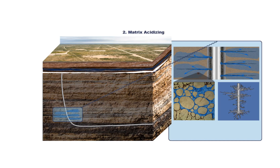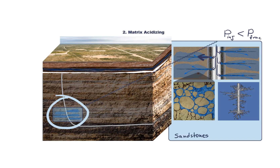The second type is matrix acidizing. In this case we inject acid through perforations into the formation. Injection pressure is below fracturing pressure and our goal is to improve permeability in the near wellbore region. In a sandstone reservoir, our goal is to remove damaging material — certain minerals or solid particles and fines that are blocking pore throats and pore spaces between grains of sand. Acid is injected to flow through the pore network and dissolve these materials that plug the porous media.